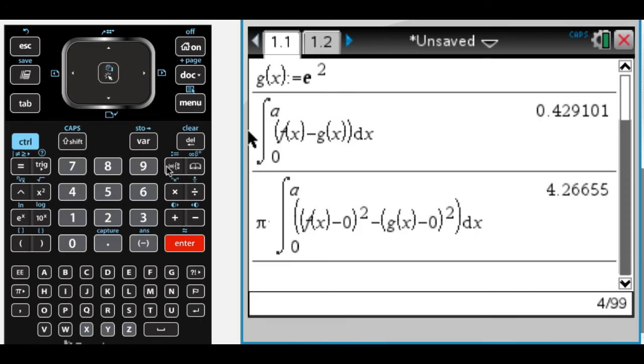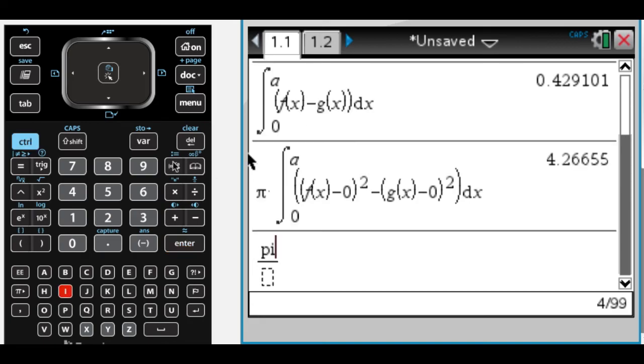And then the next question is, R is the base of a solid, and the cross sections perpendicular to the axis are semicircles. So I know how to do that, because I've done like a trillion of these. So I know that's going to be pi over 8.